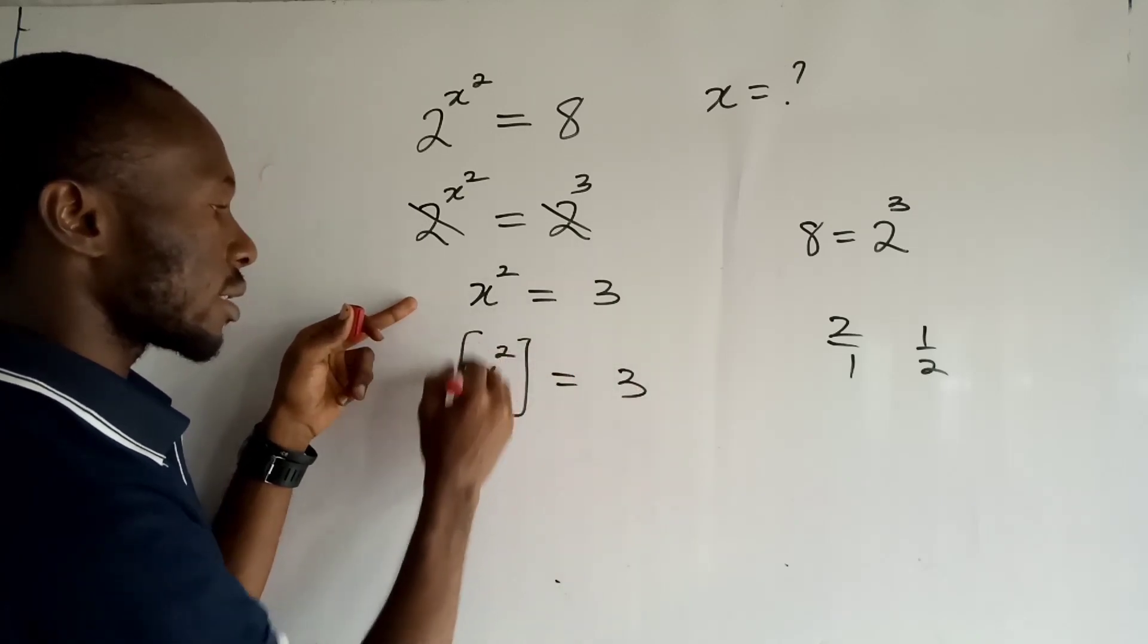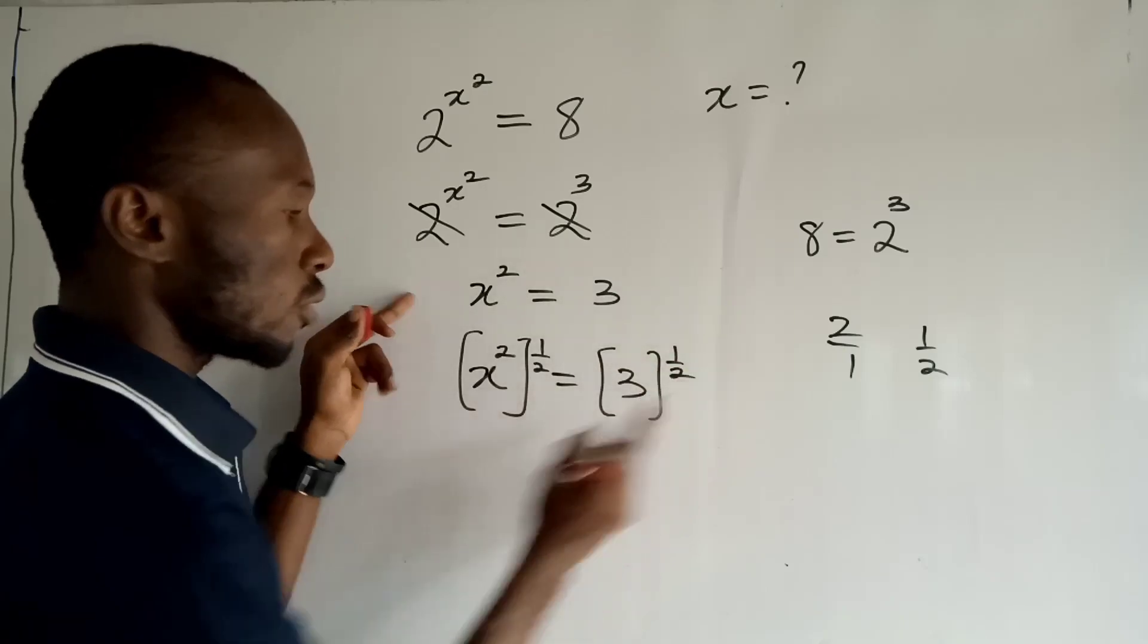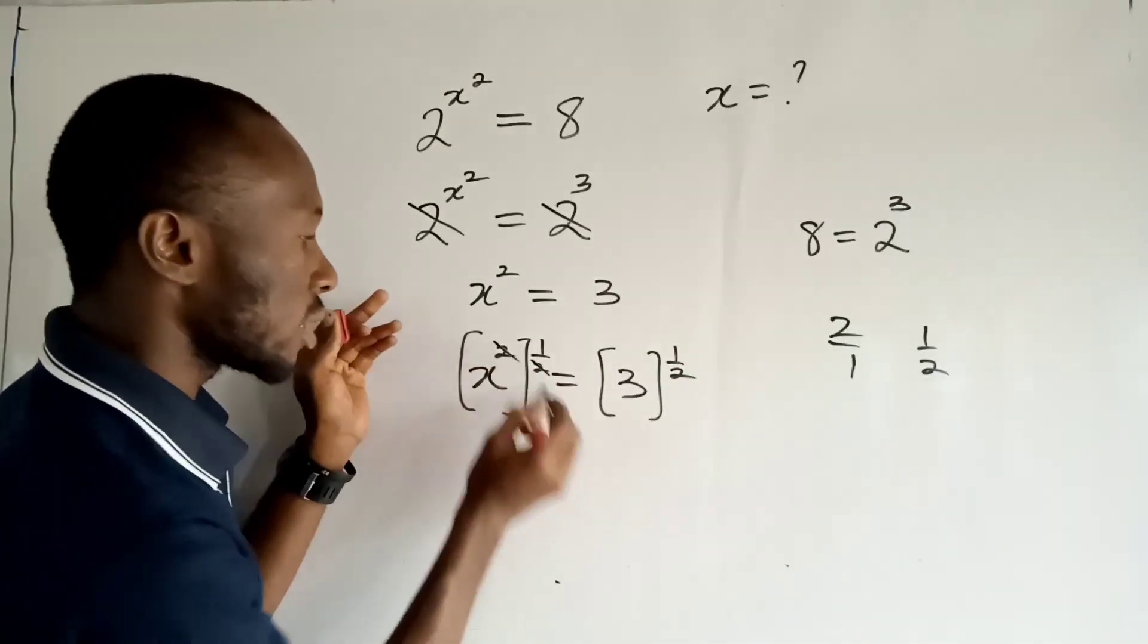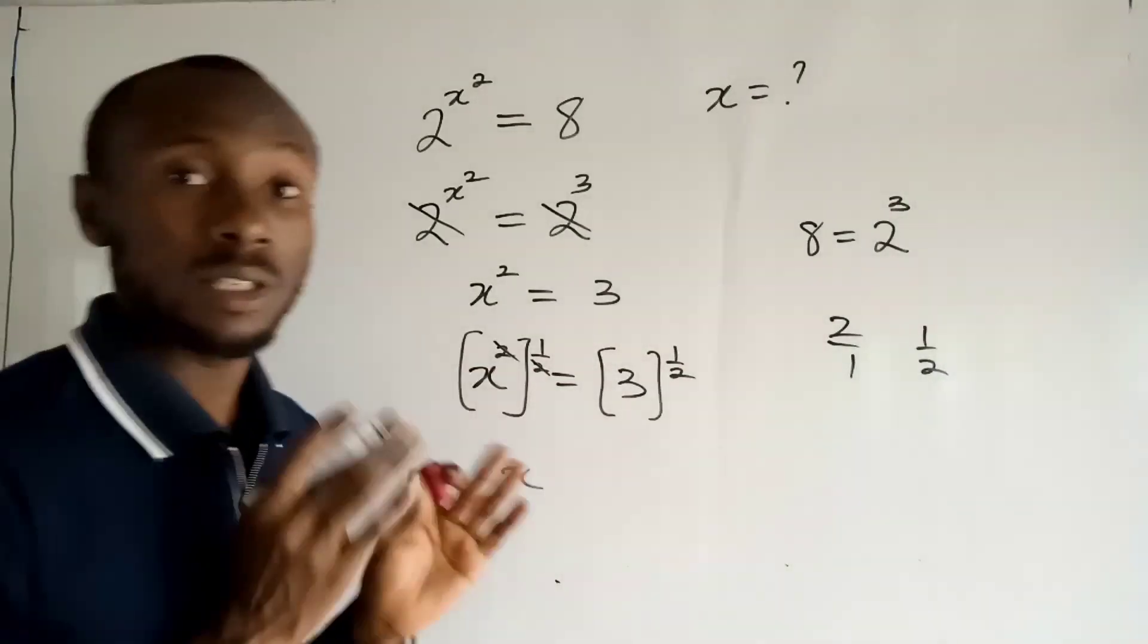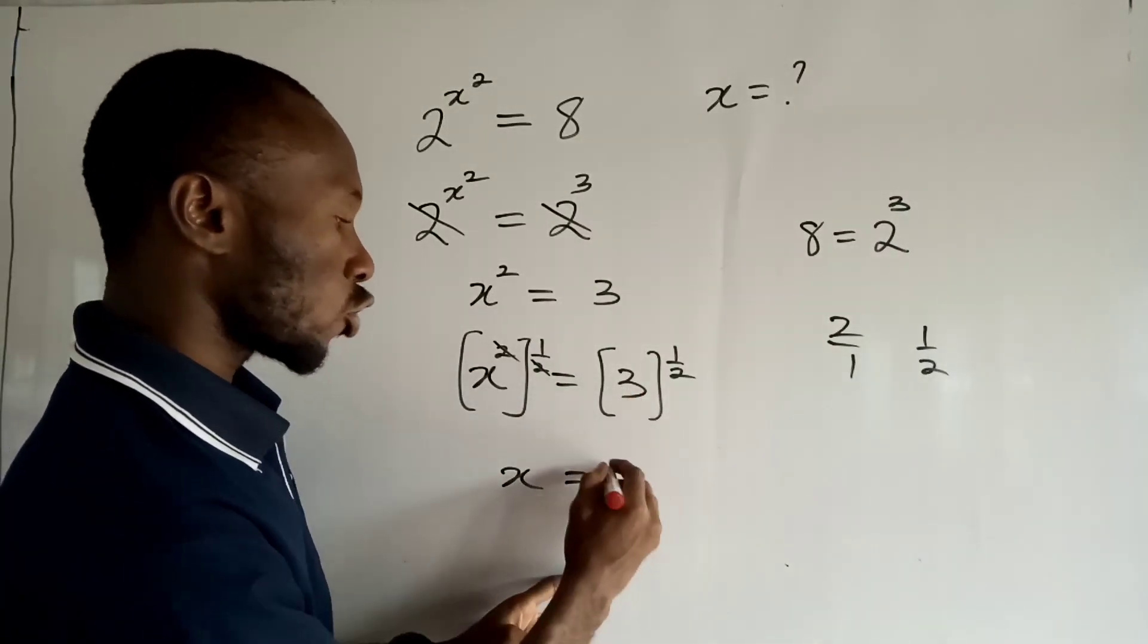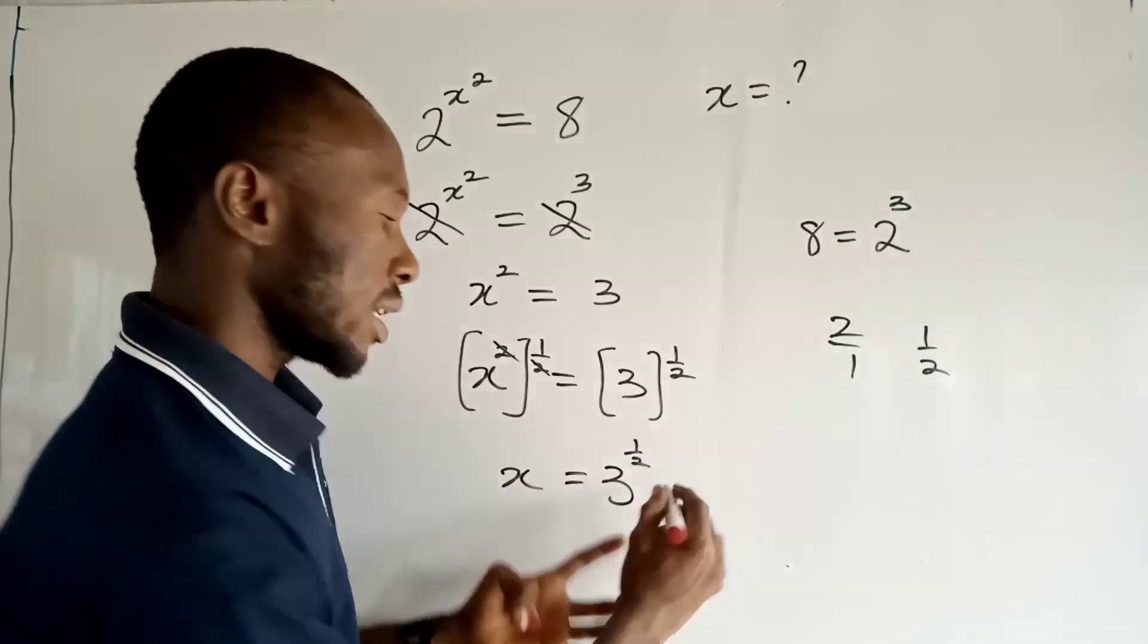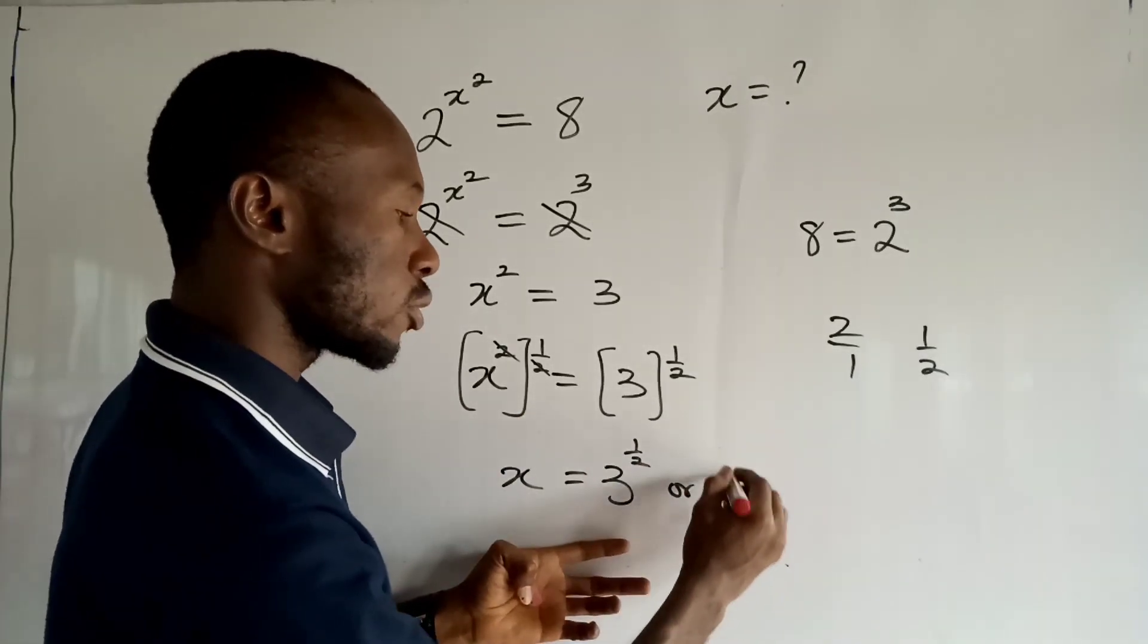Because these 2s cancel out, we now have x, and that is what we are looking for. Now we can see that x is equal to 3 to the power of 1 over 2, or you can also see that x is equal to the square root of 3.